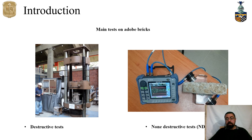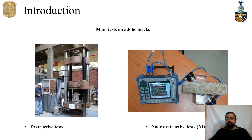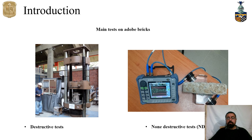It is important to mention that for conservation works in historical buildings it is not easy to perform destructive tests, which are usually used to measure the mechanical properties of construction materials. For adobe, we have two kinds of tests: destructive tests, which basically involve constructing pillars that are introduced into a press with force applied, and non-destructive tests (NDT), which are performed with ultrasonic systems or X-ray systems.